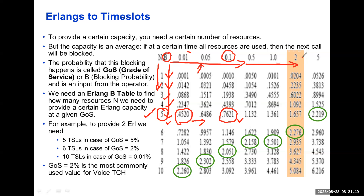Generally for voice traffic channels, the most commonly used grade of service is two percent blocking probability. As you increase the grade of service blocking probability, the traffic handling capacity increases: 1.132, 1.361. The most commonly used two percent grade of service means five physical time slots give a traffic handling capacity of 1.657 Erlangs. If we further increase to five percent blocking probability, the traffic handling capacity further increases to 2.219 Erlangs.